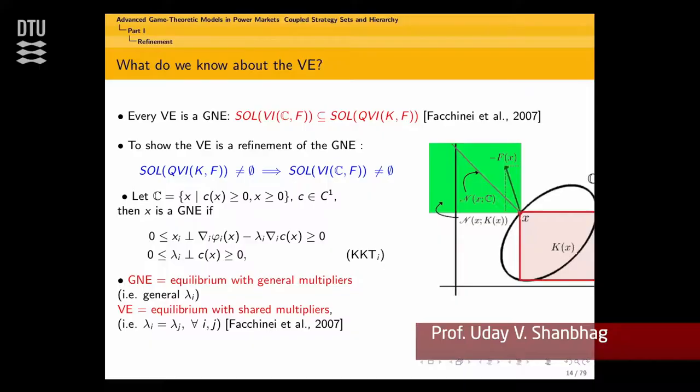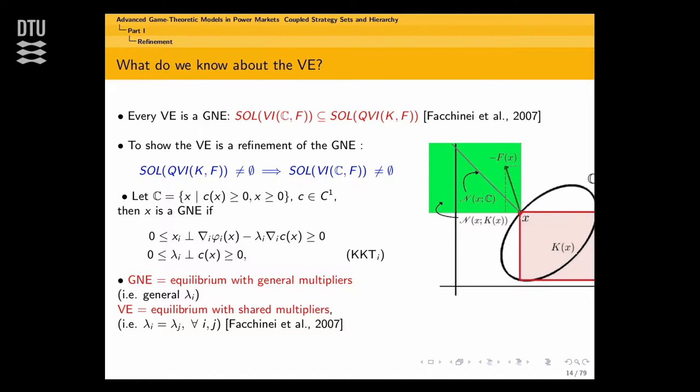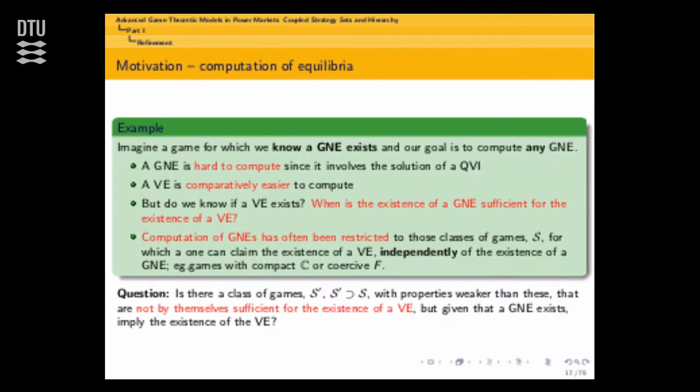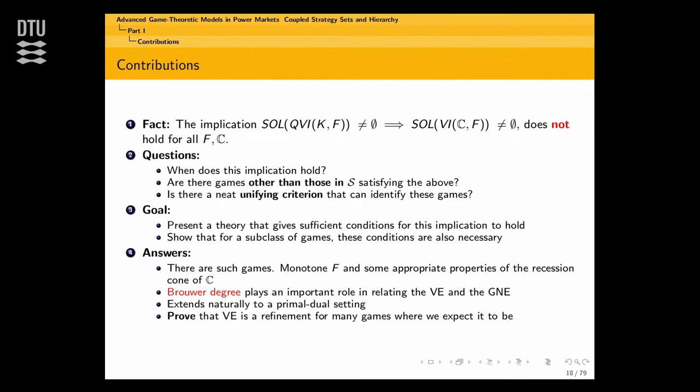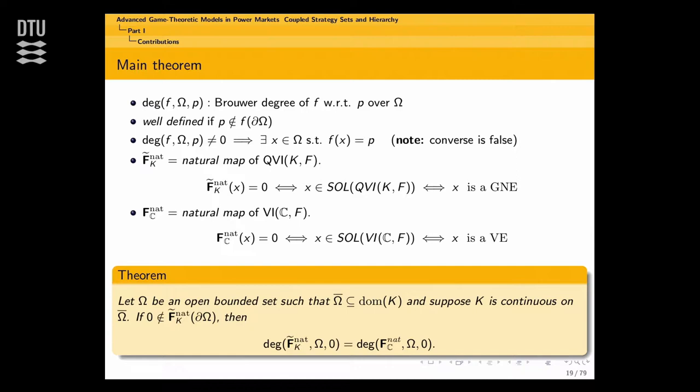Our question is to show that the VI is a refinement of the generalized Nash equilibrium. The notion of refinement is made precise using this implication: when the solution set of the QVI is non-empty, we want to show that the solution set of the VI is non-empty. We provided some rationale for why this is the case, and now let us try to provide an understanding of how to actually solve this problem.